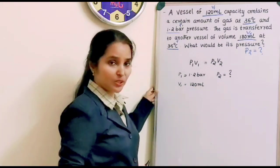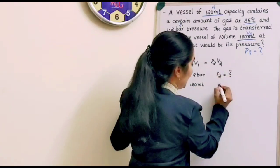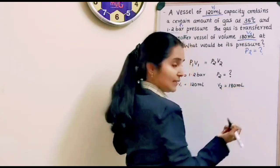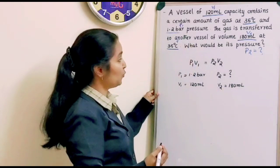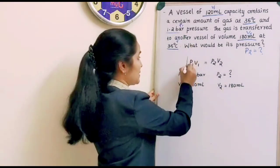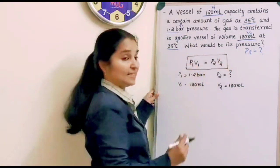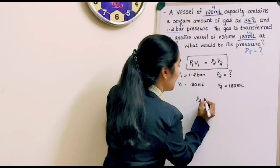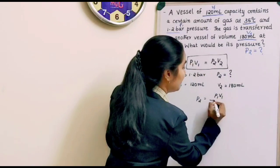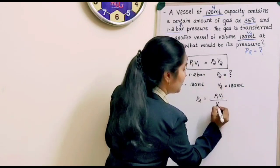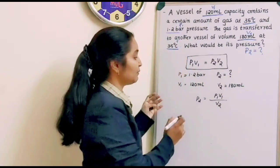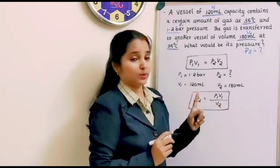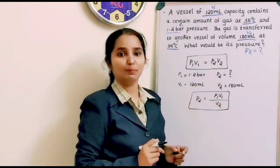And now we have V2 that is 180 ml. Fine? And now we can find out easily from this equation. From this equation we can easily find out what is P2. So P2 is equal to P1V1 divided by V2. So we have got the final equation that is needed to find out the final pressure P2.